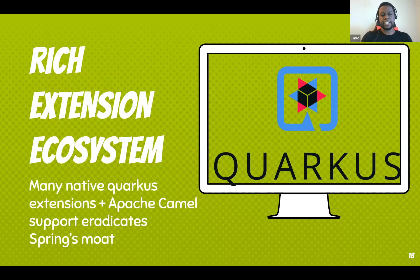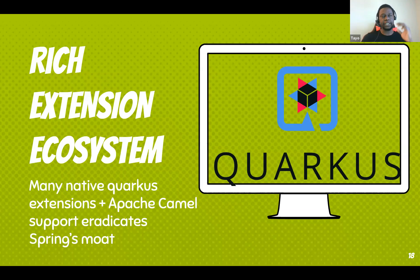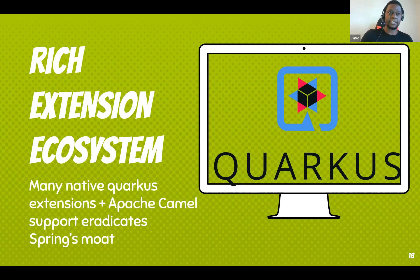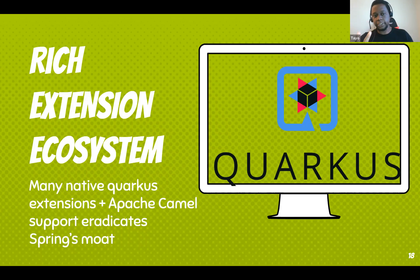Quarkus has a rich extension ecosystem — another shot across the bow for Spring. Spring's moat is that they provide a module for everything: Kafka, databases, AWS. Quarkus looked at that and raised them with the Apache Camel framework. Camel is an integration framework that provides connectivity to pretty much everything you can think of, and the Camel team forked an entire branch dedicated to porting all their extensions over to Quarkus.